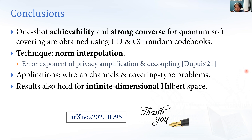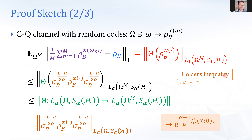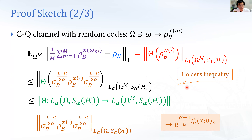Thank you for your attention and sorry for the technical problems. [Q&A] A question about the proof slide: in the Hölder inequality step, typically one sees an alpha-norm and a beta-norm where 1/α + 1/β = 1 — am I missing something? The speaker clarifies: the other term is just one because σ_B is a density operator, so taking a power of the density and tracing gives one.